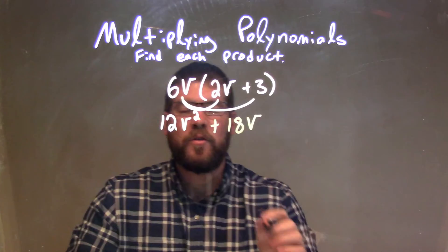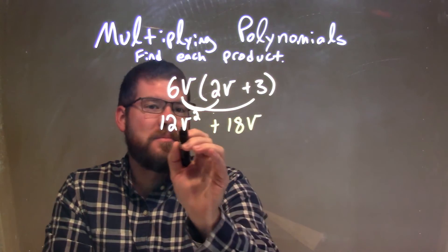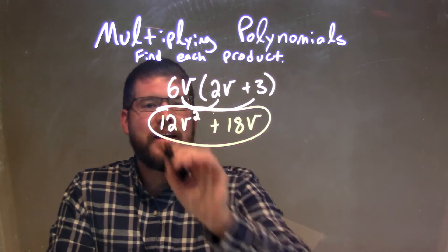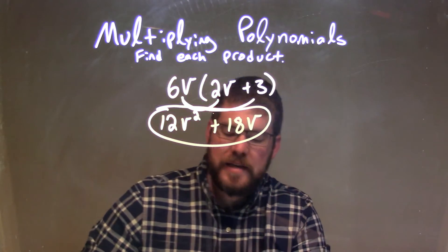And that's it. That's our final answer. That's our simplified polynomial. It's pretty simple. So our answer here is just 12V squared plus 18V.